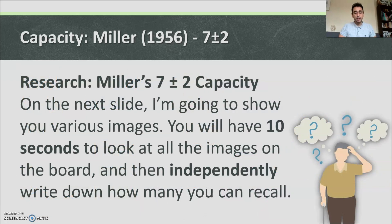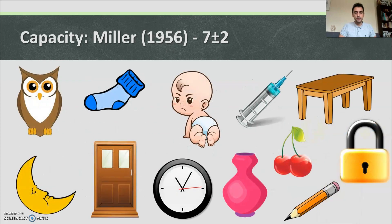The answers were: owl, moon, sock, door, baby, clock, vase, syringe, table, cherries, pencil and lock — 12 items in total. How many did you get out of 12?